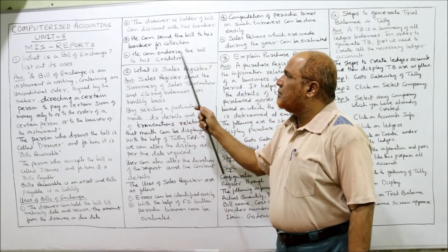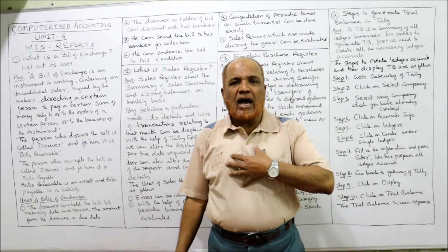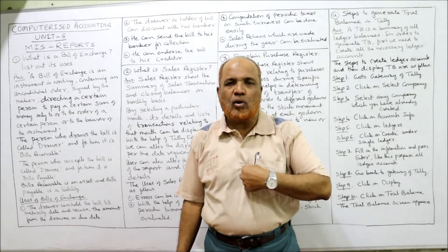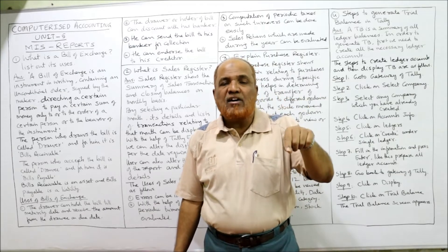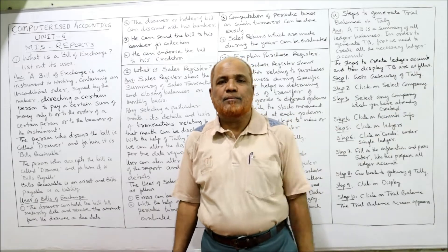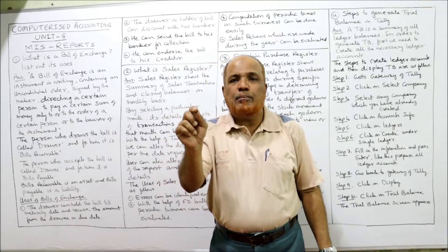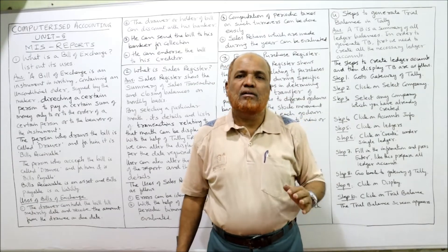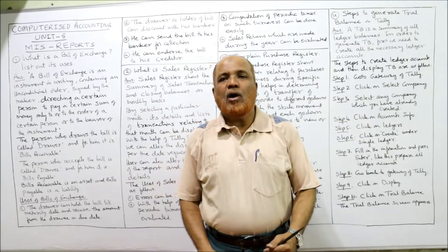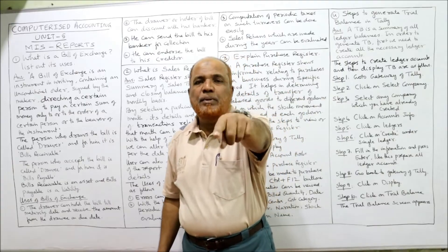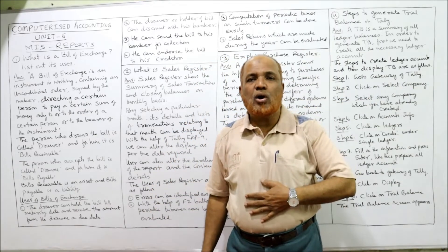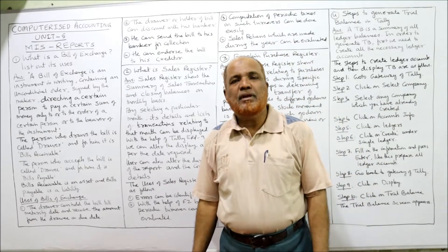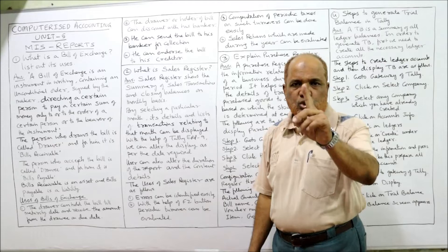Fourth use: the drawer can endorse the bill to his creditor. Suppose A has drawn a bill on B, B has accepted it and returned it to A. If A has purchased goods from C and needs to make payment but has no cash, A can endorse the bill in favor of C. C becomes the holder, and on the due date C presents the bill to B for payment. These are the four uses of the bill of exchange.